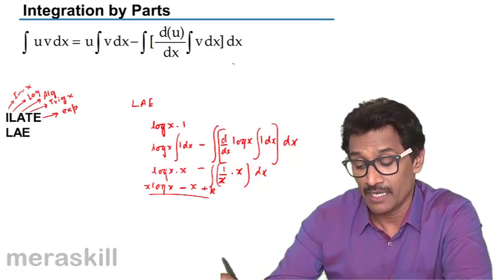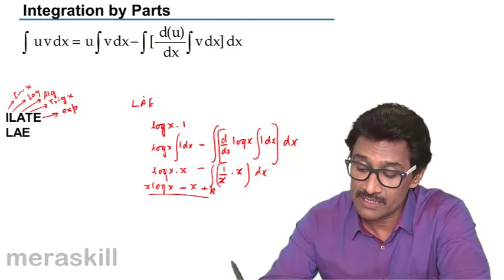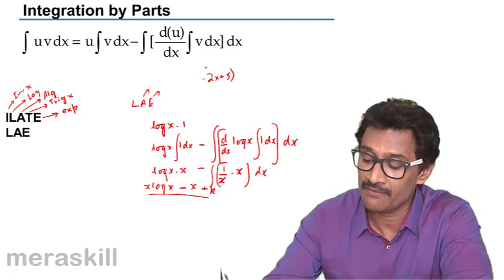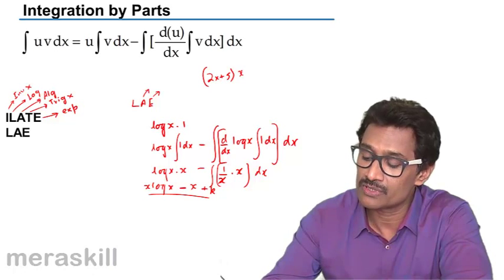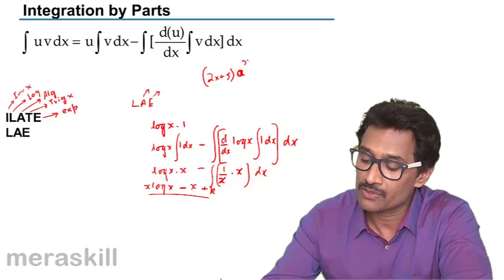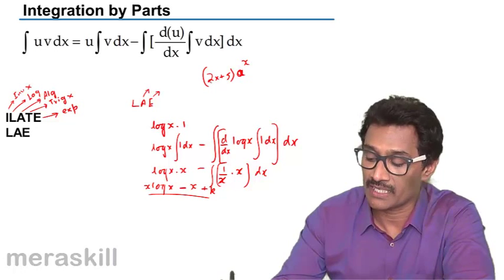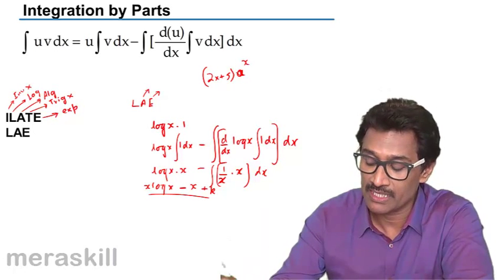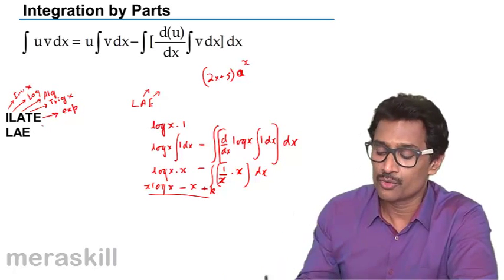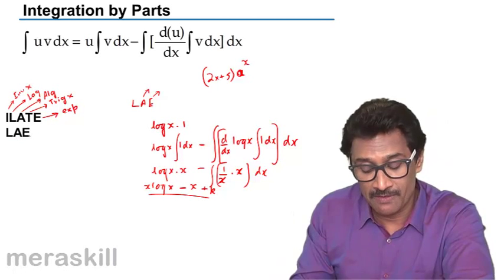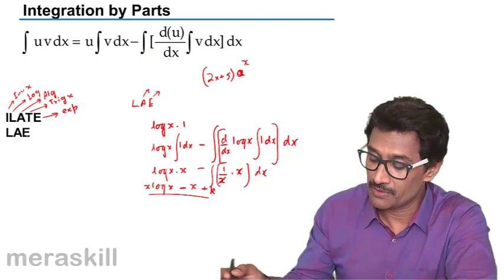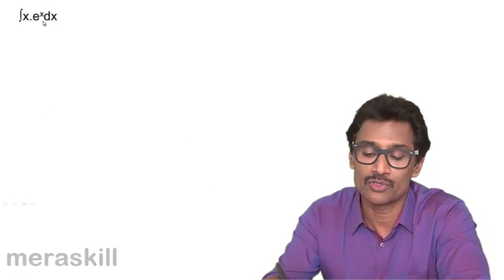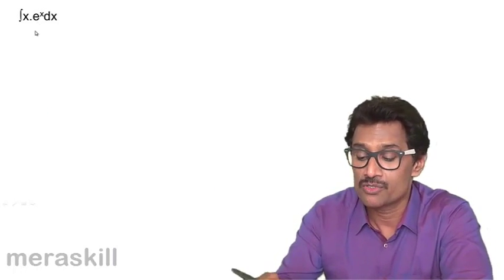If there is no logarithmic function but you have an algebraic function and an exponential function, say (2x + 5)·aˣ, you take the algebraic part as u and the exponential as v. This is the general rule: logarithmic, algebraic, exponential — in that order of priority.